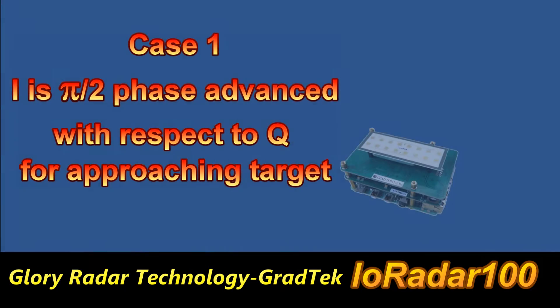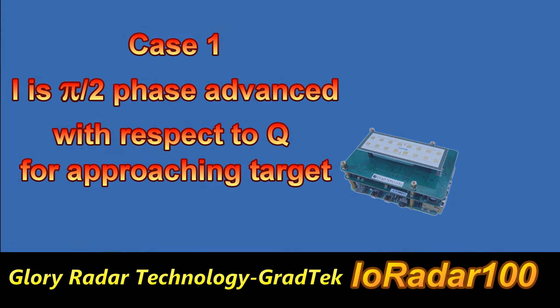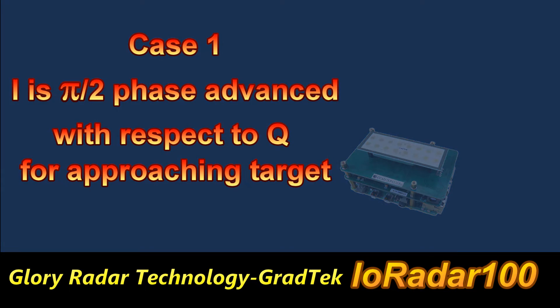Case 1: I is Pi over 2 phase advanced with respect to Q for an approaching target.